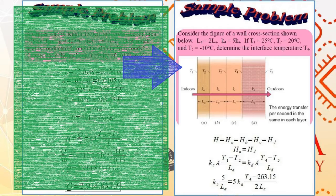And now, we move on to the last example. Consider the figure shown. It is a figure of a wall cross-section. The cross-section is comprised of four layers. Layer A, Layer B, Layer C, and Layer D. And according to the problem, the thickness LD is twice the thickness of layer A, LA. And the thermal conductivity of layer D is five times the thermal conductivity of layer A. KD is equal to 5 Ka.